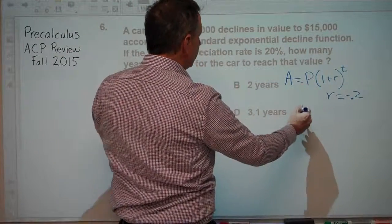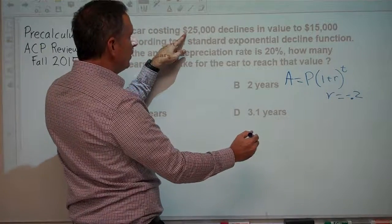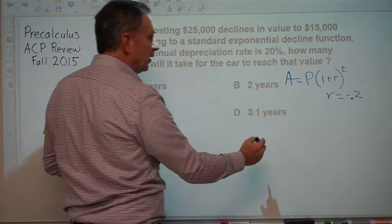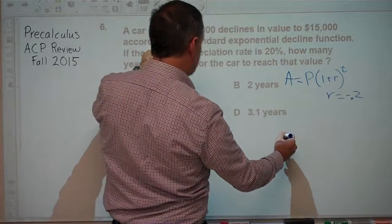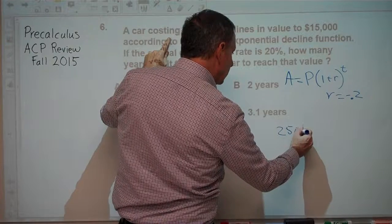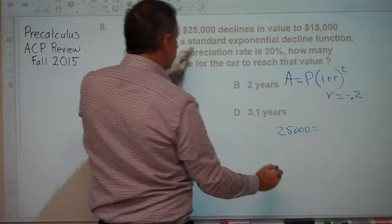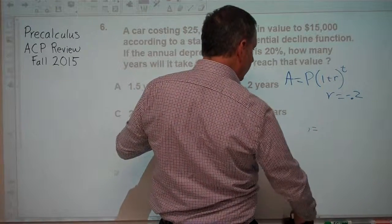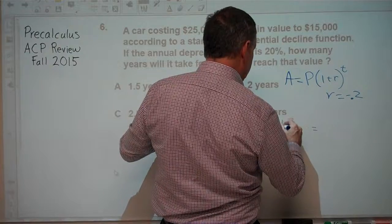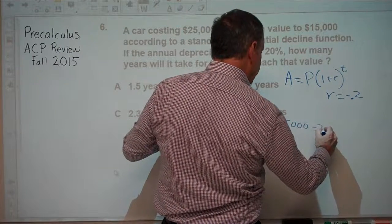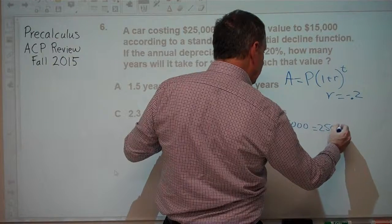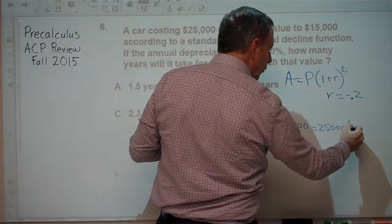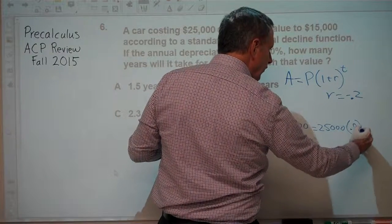So filling in our values, the final amount is what we're interested in. Our final amount is $15,000, that's what we're targeting, equals our starting amount, which is $25,000, times 1 plus r. Well, 1 plus negative 0.2 is 0.8, and that's to the power of t.